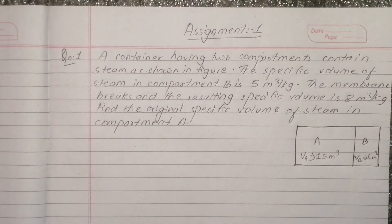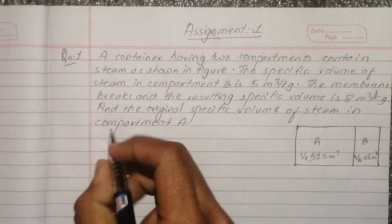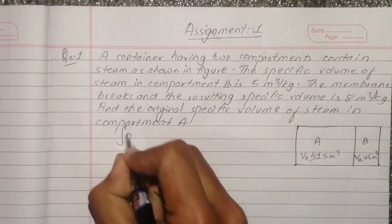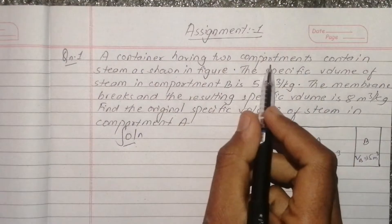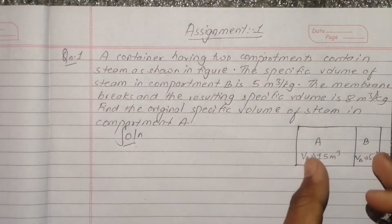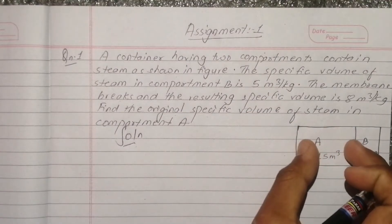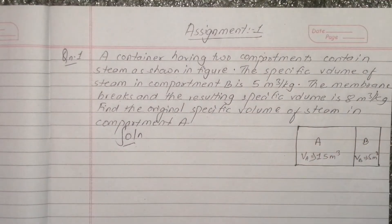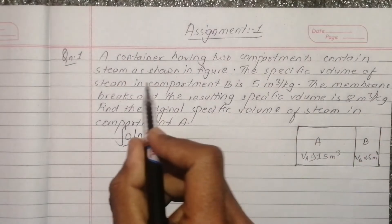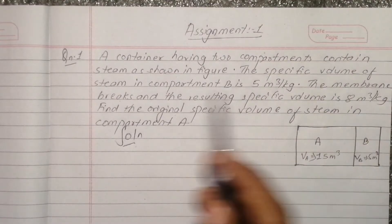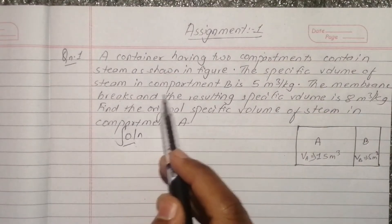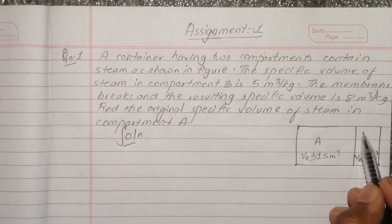Question number 1: Our container is having 2 compartments. The container is having 2 compartments — the components are A and B. The contents are steam. The specific volume of steam in compartment B.